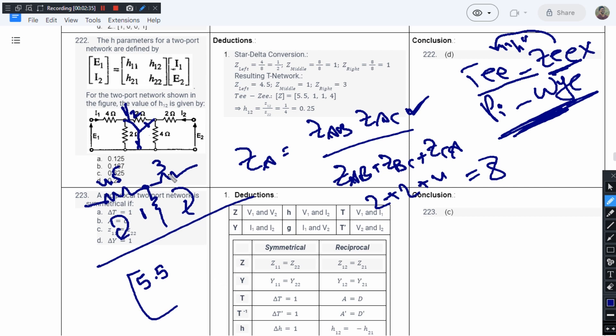And this element is going to be 3 plus 1, which equals 4, and this element is going to be 1 and 1 each. So now this is the Z parameter matrix. Now we can convert this to H parameters using the conversion formula.